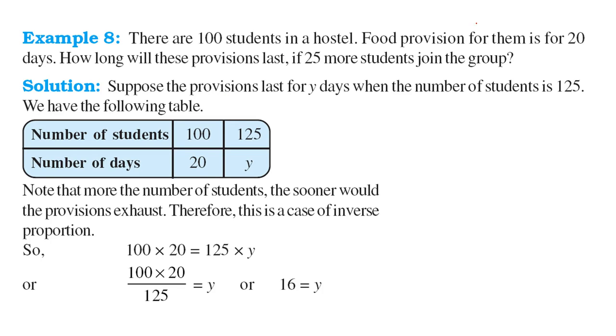There are 100 students in a hostel. Food provision for them is 20 days. How long will these provisions last if 25 more students join the group? So we have a provision, it lasts for y days. When the number of students is 125, just make a table. For 100, days are 20. For 125, we don't know what amount it is. But the food remains the same. So 100 into 120 will be equal to 125 to y because they are in inverse proportion. You can find y by dividing the multiplication of 120 by 125. You get y equal to 16.